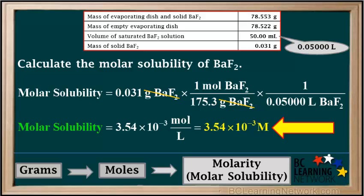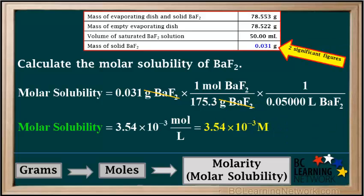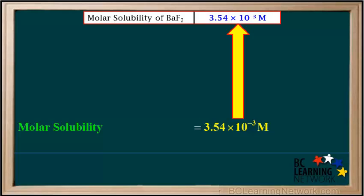Note that this answer has three significant figures — one more than the two significant figures in the mass of solid BaF₂. However, since the molar solubility is only the first step in this problem, we will carry one extra significant figure and round to two significant figures at the very end. So the molar solubility of BaF₂ is 3.54 × 10⁻³ M.